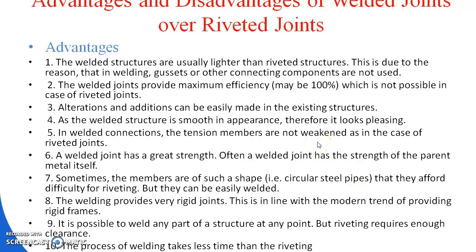The first advantage of welding joint over riveted joint: welded structures are usually lighter than riveted structures. This is because in welding, gussets or other connecting components are not used. In a riveted joint, a rivet is a specific fastening component, but in a welding joint there is no specific component — only molten metal or filler material is used to join two plates or rods.